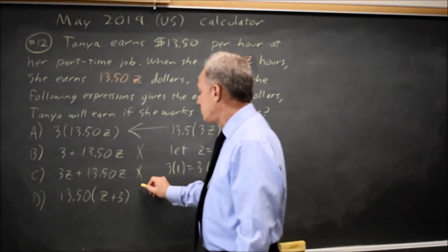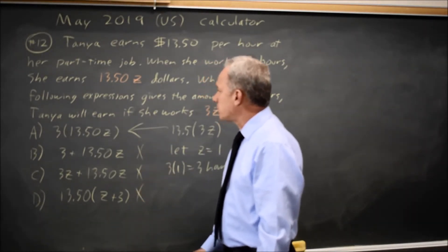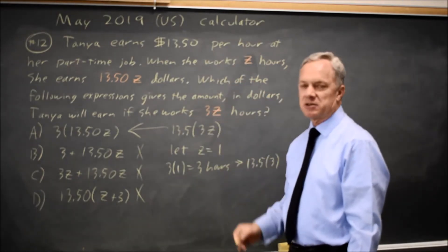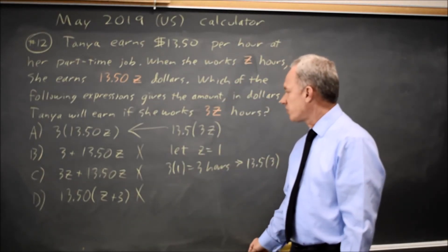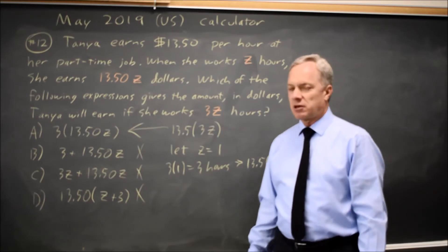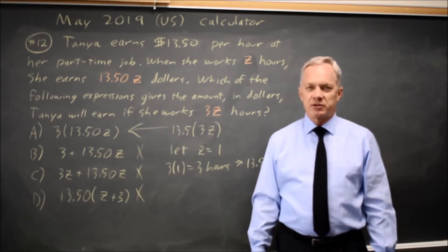So these three do not work for Z equals 1, because we know if Z equals 1 and she works 3Z hours, that's 3 hours and we can find her income. And choice A is the only one that matches for that value.